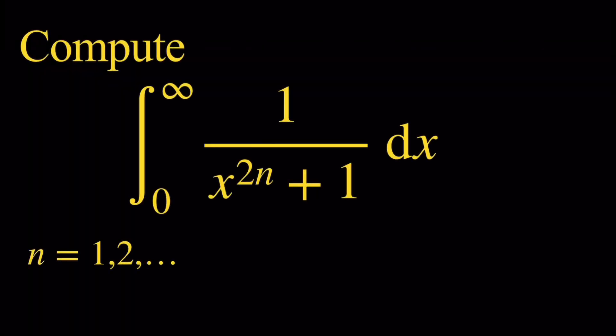Hello everyone and welcome. In this video, we're going to compute the integral from 0 to infinity of 1 over x to the 2n plus 1 dx, where n is a positive integer. We're going to compute this integral using the residue theorem. We're not going to prove that it is convergent, but I encourage you to leave a comment and let me know why this integral is convergent.